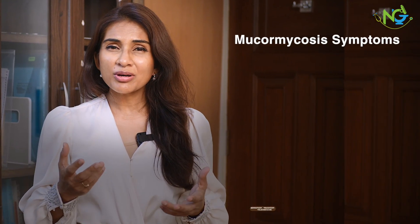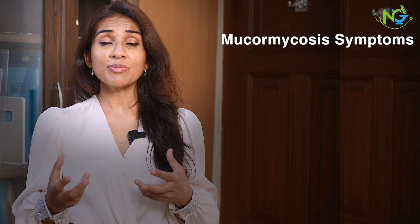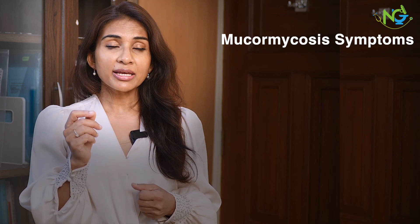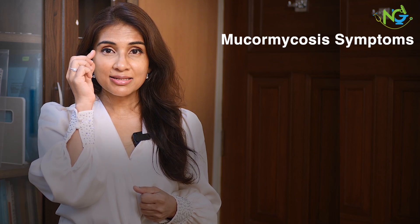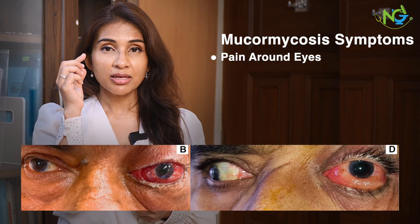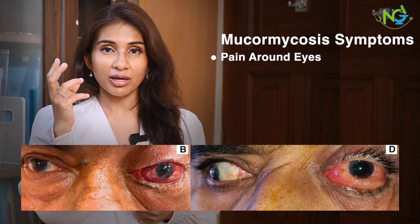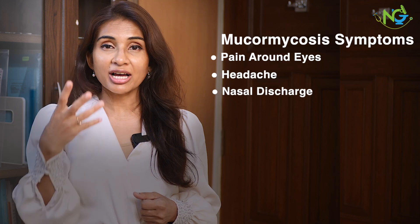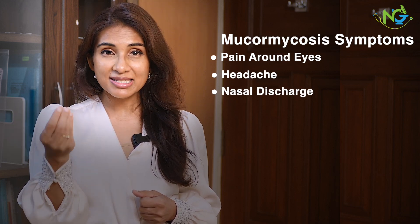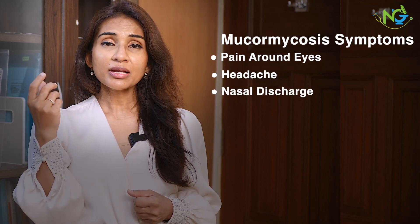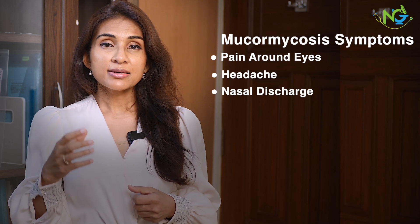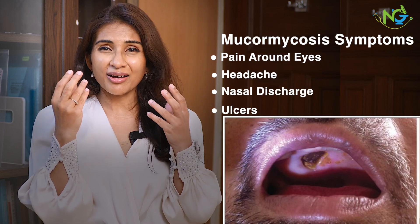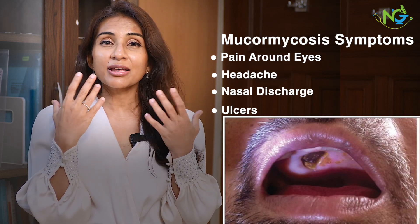So how does mucormycosis present? What can be the symptoms of mucormycosis? Usually, if there is pain around the eyes or retro-orbital pain, headache, nasal discharge — especially blood-stained discharge — or severe headache, or there is an ulcer in the mouth.